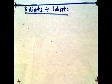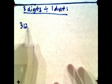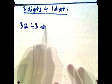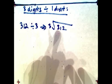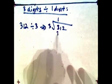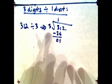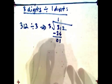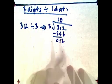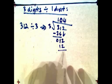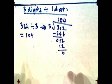We just did 2 digits divided by 1 digit. Now let's do 3 digits divided by 1 digit. For example, 312 divided by 3. Set it up as 3 divided into 312. 3 goes into 3 once — 1 times 3 is 3, minus the difference is 0. Bring down the 1. Now, 3 cannot go into 1, so you need a placeholder of 0. Then bring down the 2, so now it's 12. 3 goes into 12 — 4 times 3 is 12, subtract the difference, that's 0. So the answer is 104.